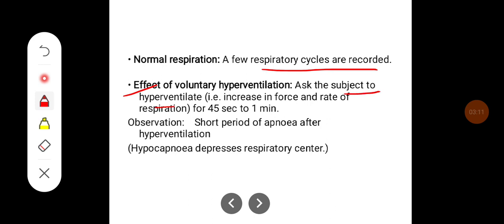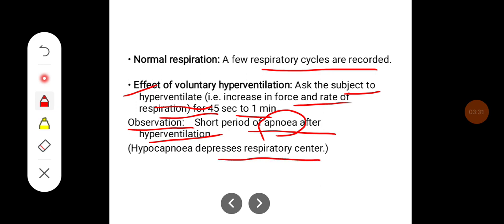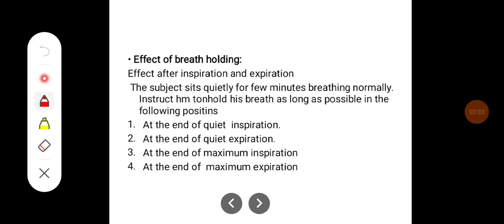Next, the effect of voluntary hyperventilation: the subject is asked to hyperventilate, that is, to increase the force and rate of respiration for 45 seconds to 1 minute. What you observe is a short period of apnea after hyperventilation. This phase of apnea occurs due to hypocapnia, which depresses the respiratory center.